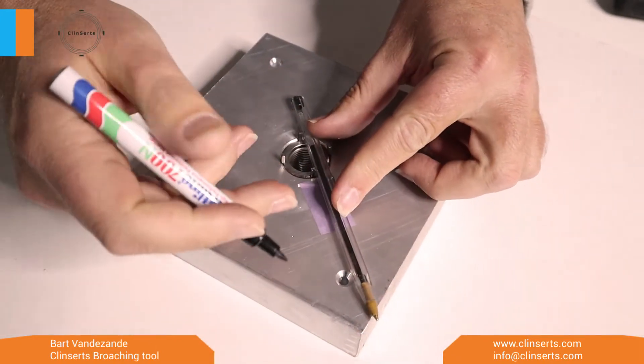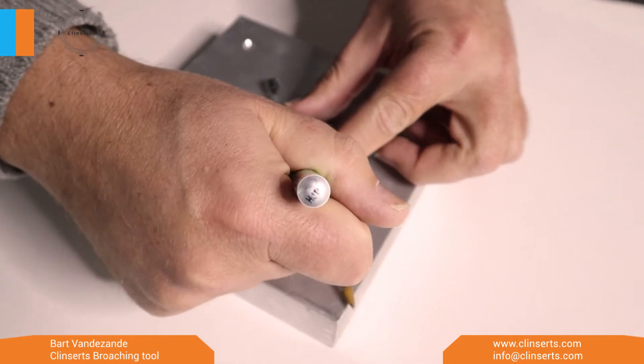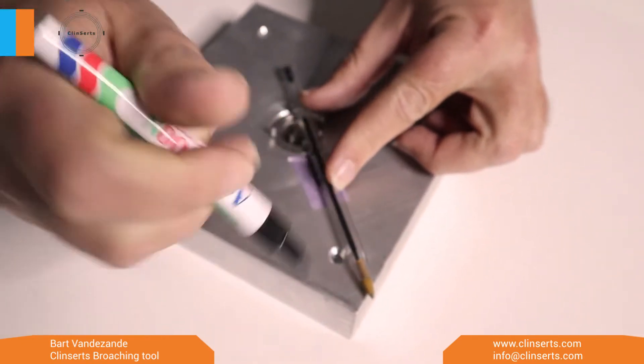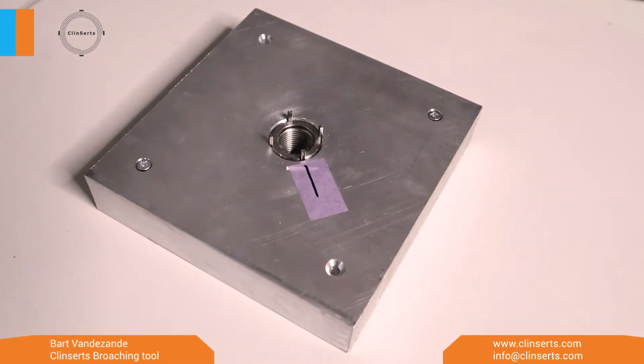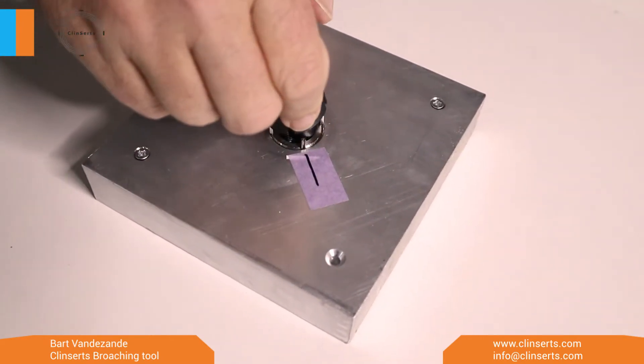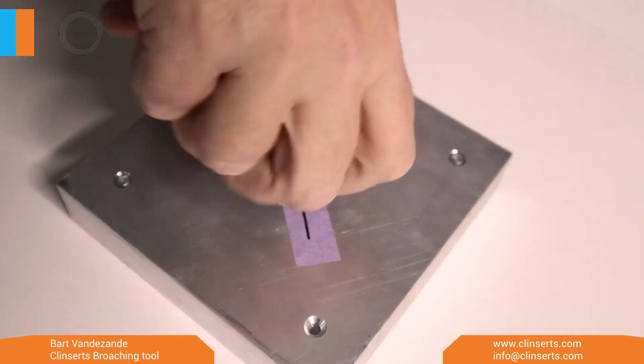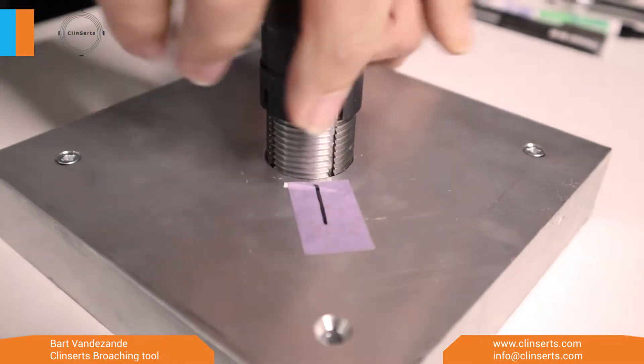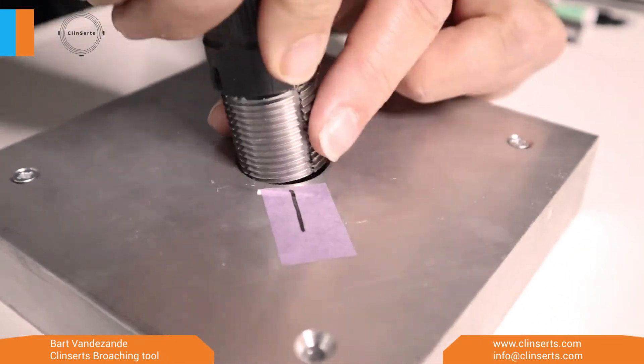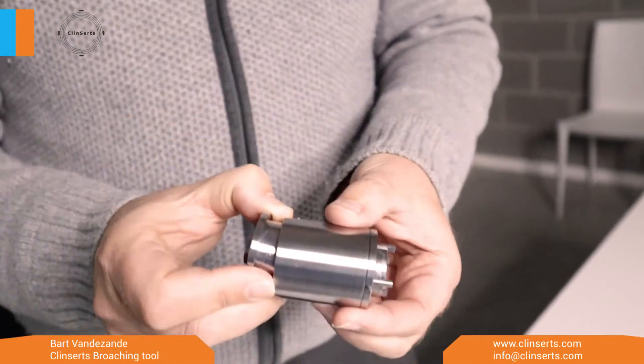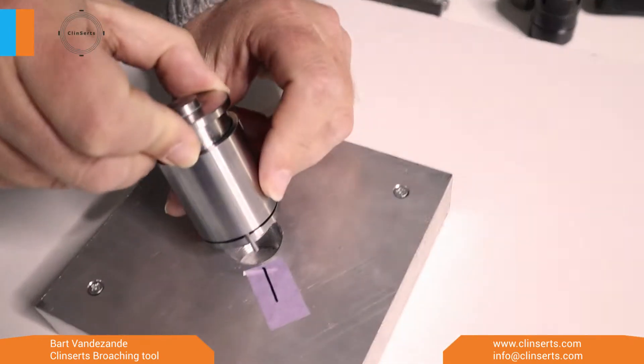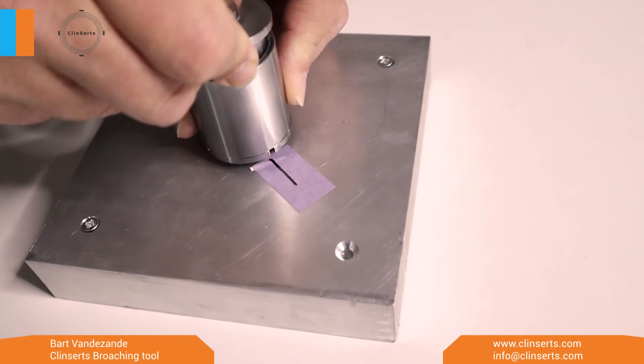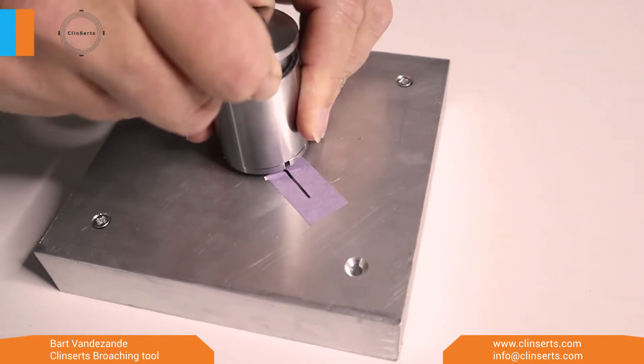So what I'll do is like this. Okay, take the insert out again. So now you have the broaching tool. Align the pins—it's a very tight fit, so make sure it's well in place.